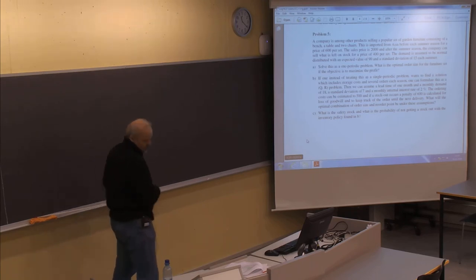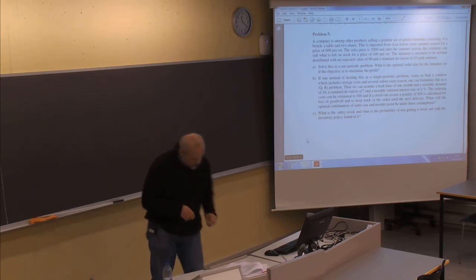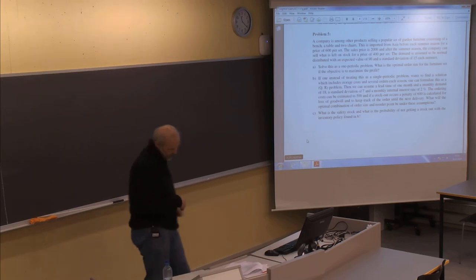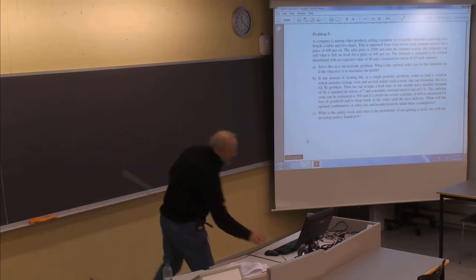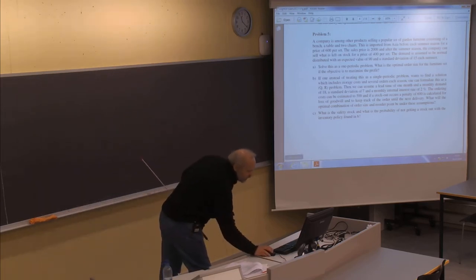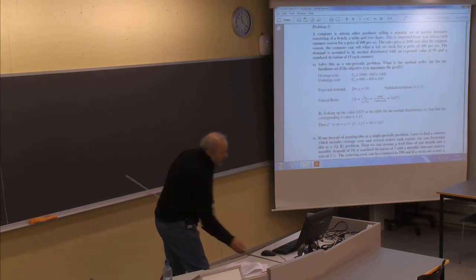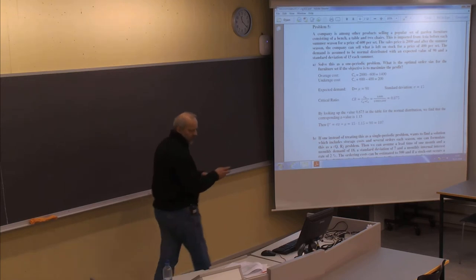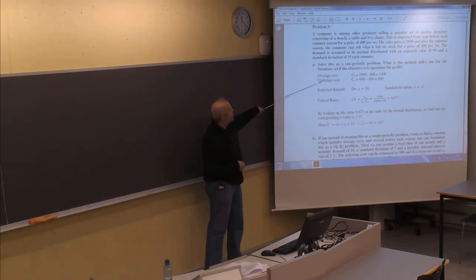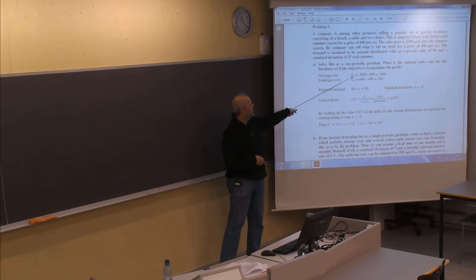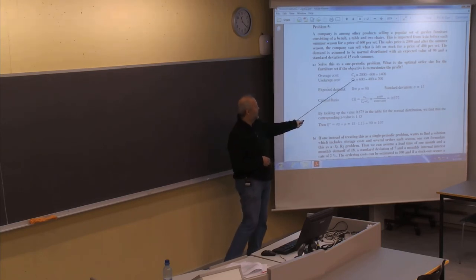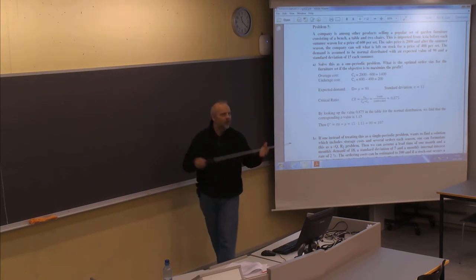Looking at the solution shown here, we can see immediately that the labels should actually be swapped — the underage cost should be CU and the overage cost should be CO, so these two should change places. But anyway, let's proceed.